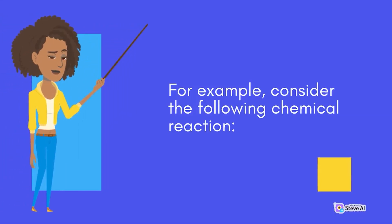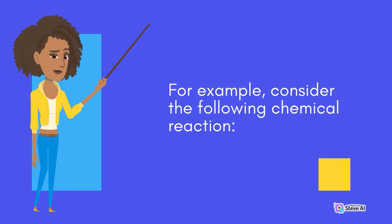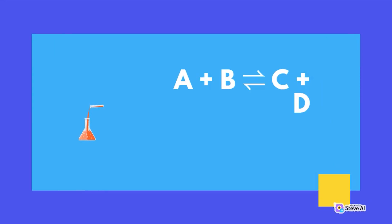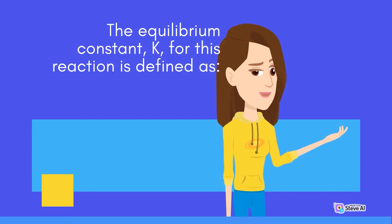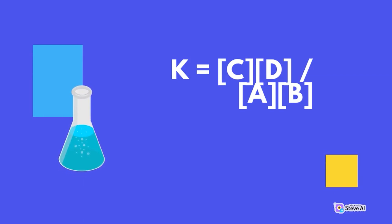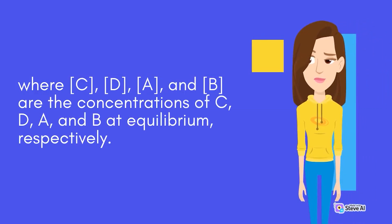For example, consider the following chemical reaction: A + B → C + D. The equilibrium constant, K, for this reaction is defined as K = [C][D] / [A][B], where [C], [D], [A], and [B] are the concentrations of C, D, A, and B at equilibrium, respectively.